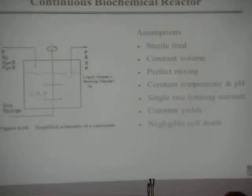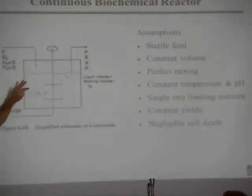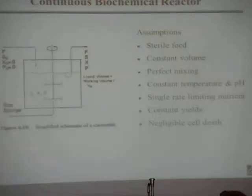The assumptions here: sterile feed, no cells in the feed, constant volume operation, perfect mixing as usual. So you'd operate this at constant temperature and pH, because the cell likes to grow at a particular temperature and pH, different for each type of organism, but you typically know what it is. So that wouldn't be changing.